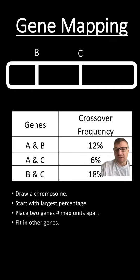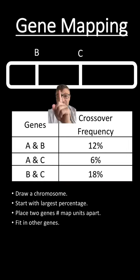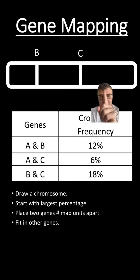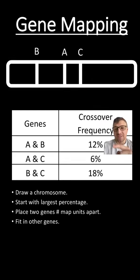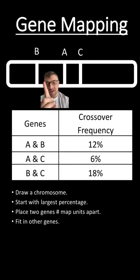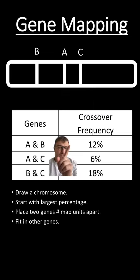Next, we're going to take a look at these two other frequencies and try to figure out where A goes. There's a 6% crossing over frequency between A and C, which means A can go somewhere around here or somewhere around here. You can probably guess that A is going to go here, because between A and B you have 12%. So there's going to be 12% here and 6% here. A can't be on the other side because it would make the distance between B and A larger than 18%. So in these gene mapping problems, you're basically using these frequencies to figure out and map out where genes are on a chromosome.